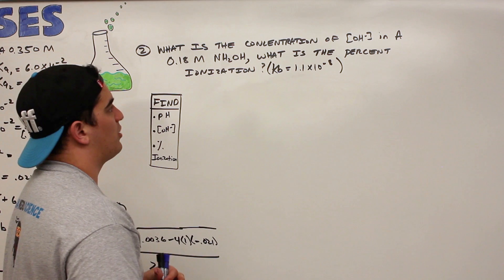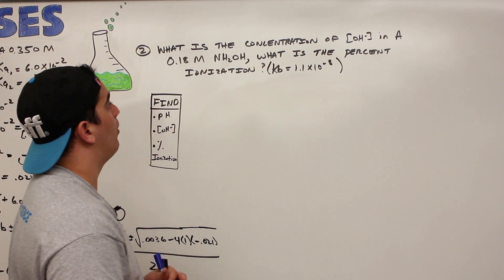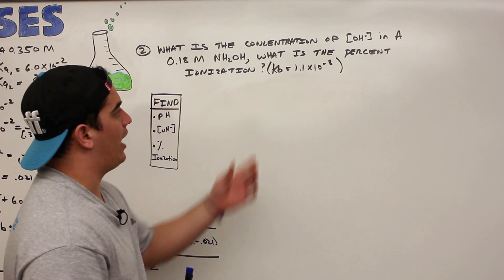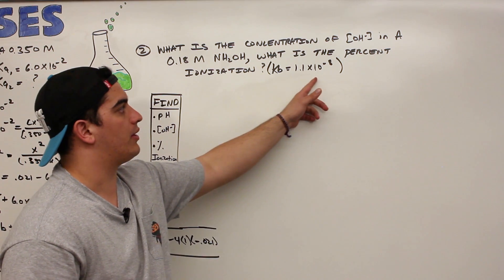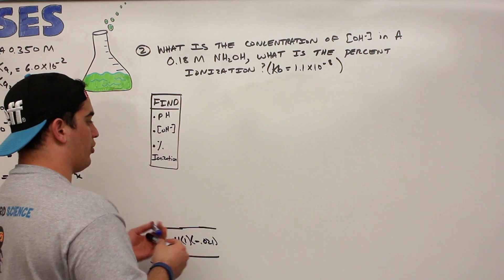If you look here, number two says what is the concentration of the hydroxide ions in a 0.18 molar NH2OH solution, and what is the percent ionization? They gave us the Kb for NH2OH, which is 1.1 times 10 to the negative 8. Let's use that formula, that little trick that we talked about again.